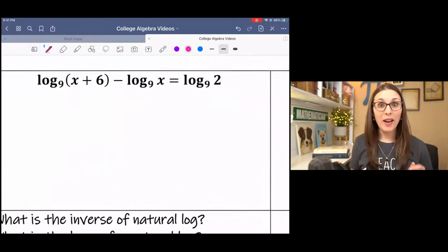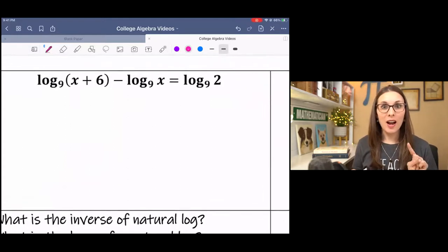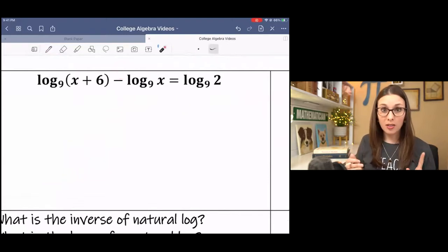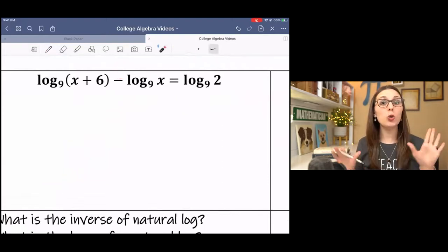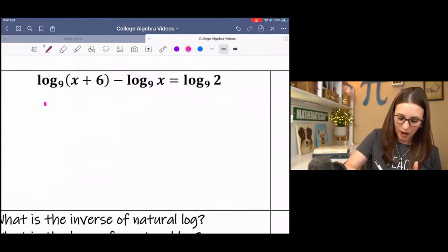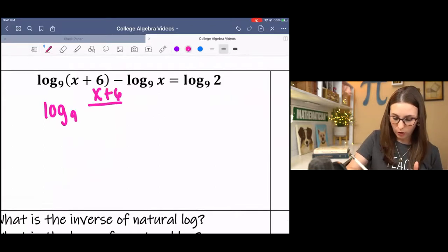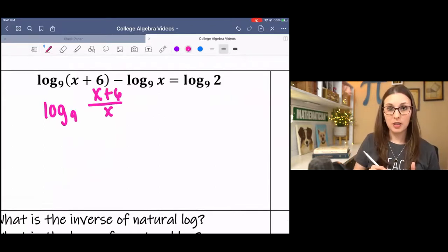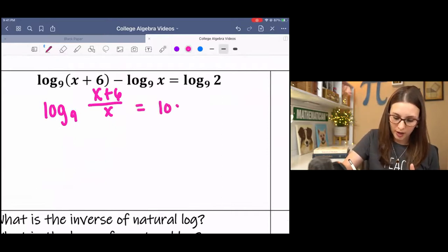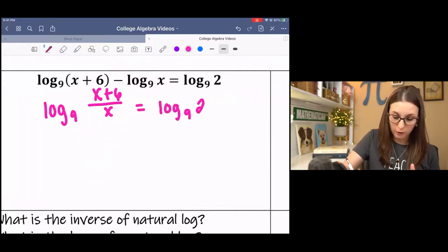Next one looks sporty. Ooh, we have a minus in there. Now, what do we know when we subtract logs that translates into division? So what's actually happening here is we have x plus 6 over x. So this minus made our logs with the same base consolidate with division. And then on this side, we have log base 9 of 2.